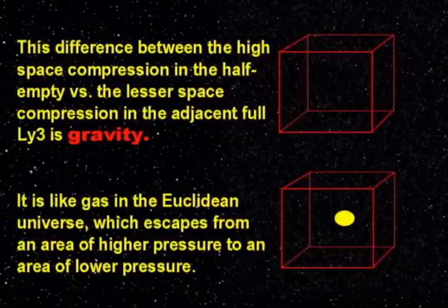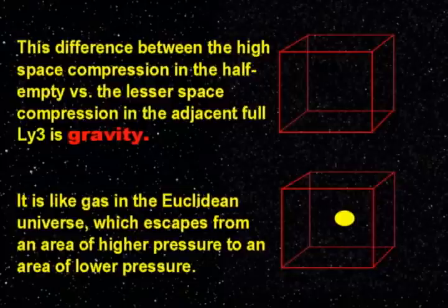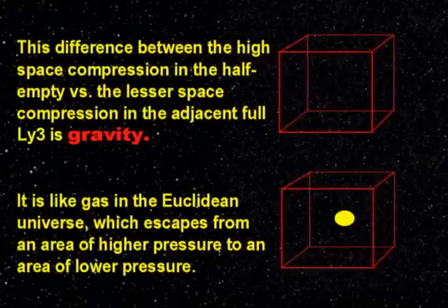This difference between the high space compression in the half-empty versus the lesser space compression in the adjacent full cubic light-year of space is gravity. It is like gas in the Euclidean universe which escapes from an area of higher pressure to an area of lower pressure.